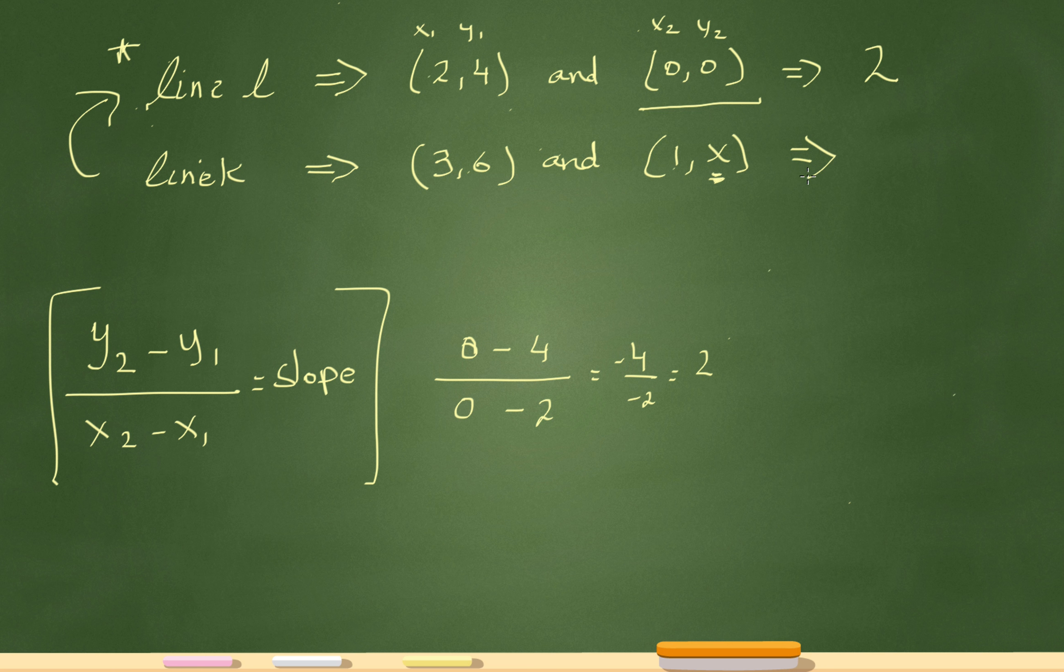That tells me that the slope of line K must be—remember they're perpendicular lines—so the slope of line K must be -1/2. Because you want to flip the slope and change the sign. So when I flip 2, it becomes 1/2. And since this is positive, the slope here will be negative.